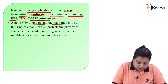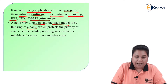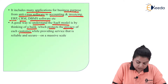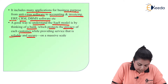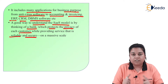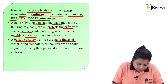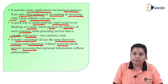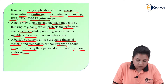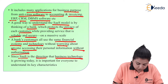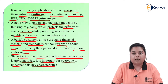A good way to understand the Software as a Service model is by thinking of a bank, which protects the privacy of each customer while providing a service that is reliable and secure on a massive scale. A bank's customers all use the same financial system and technology without worrying about anyone accessing their personal information without authorization. Since Software as a Service is the direction that business technology is growing today, it is important for everyone to understand its key characteristics.